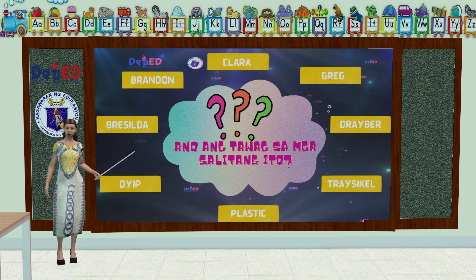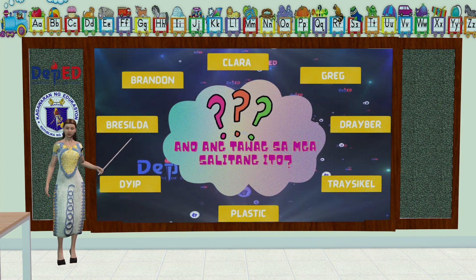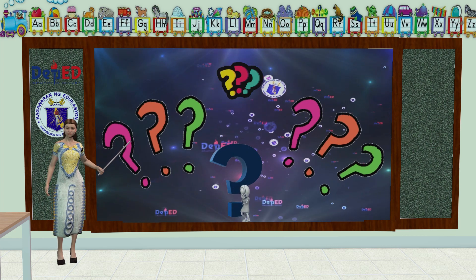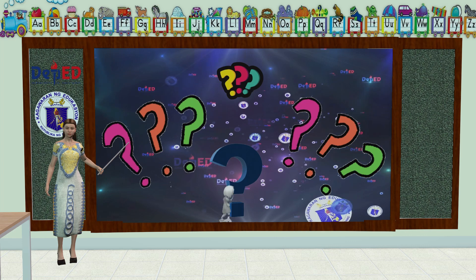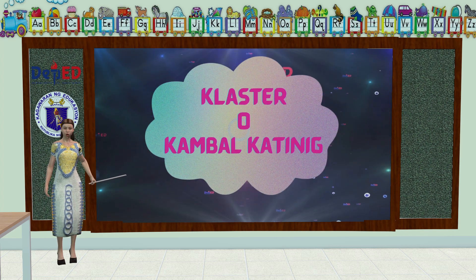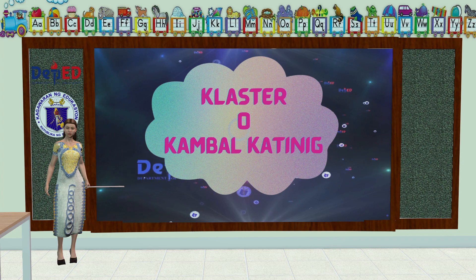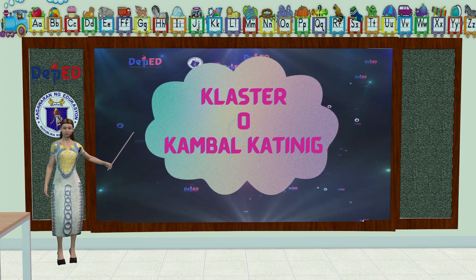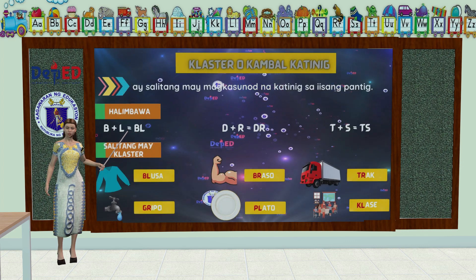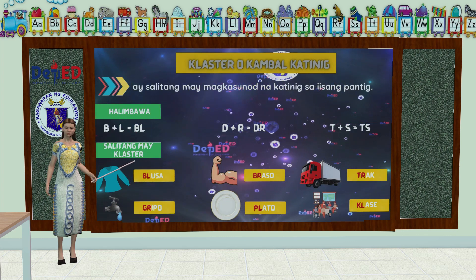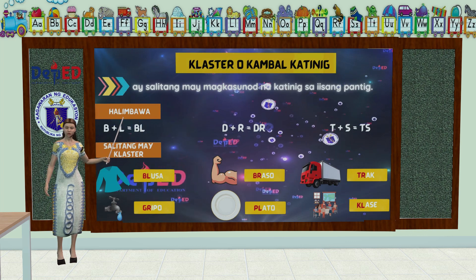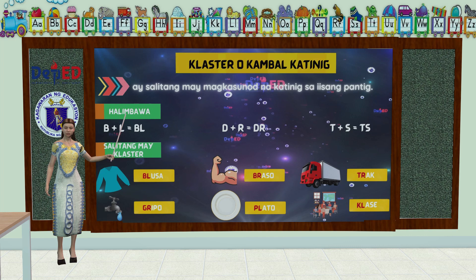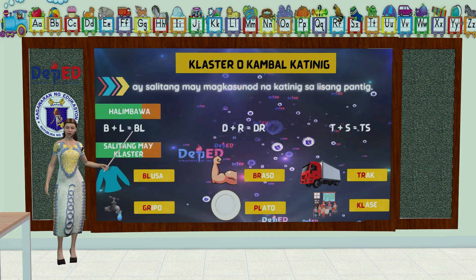Alam niyo ba kung ano ang tawag sa mga salitang ating ginamit sa kwento, mga bata? Plastik. Mahusay, mga bata! Ang tawag sa salitang ating ginamit ay cluster o kambal katinig. Alam niyo ba kung ano ang ibig sabihin ng kambal katinig? Ang cluster o kambal katinig ay salitang may magkasunod na katinig sa iisang pantig. Tingnan natin ang halimbawa.